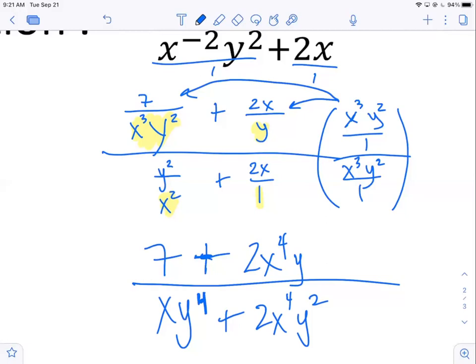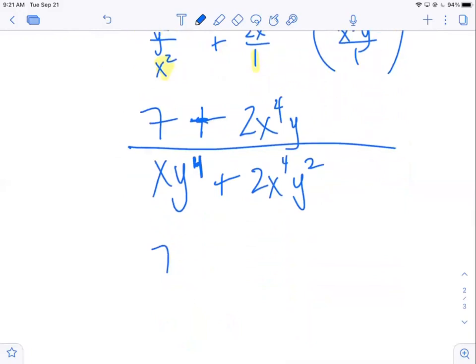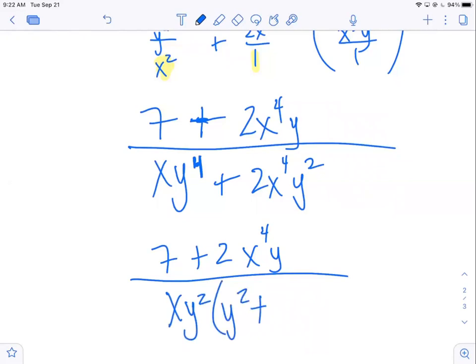And we're pretty much done because the top doesn't factor. And if the top or the bottom, neither one factors, then nothing is going to divide out. The bottom, just for kicks and giggles, the bottom does factor. So let's just kind of explore that. What can I factor out, Brady, in the bottom? What's the greatest common factor? x and y squared. Good. And when I pull it out front, that leaves me a y squared in the first term plus a 2x to the cubed. So that's just another version of the answer. Nothing divides out, but having a factored version of the answer as we move forward and start using this stuff could be useful.